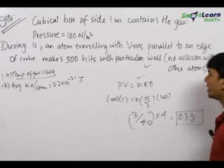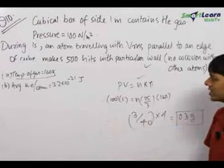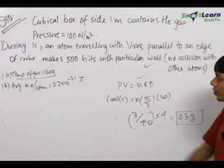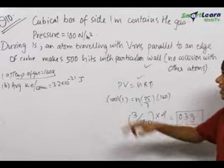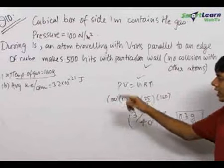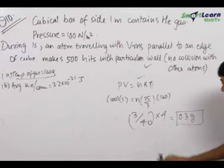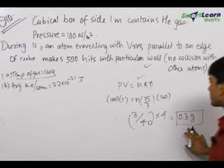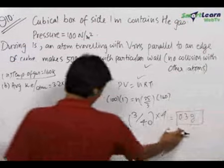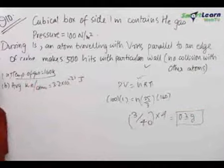So, the final answers: the temperature of the helium gas comes out to be 160 Kelvin, the average kinetic energy per atom comes out to be 3.2 × 10⁻²¹ joules, and the total mass of helium gas present in the box comes out to be equal to 0.3 grams.